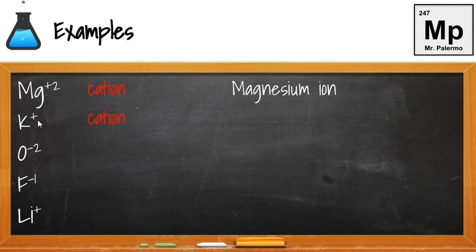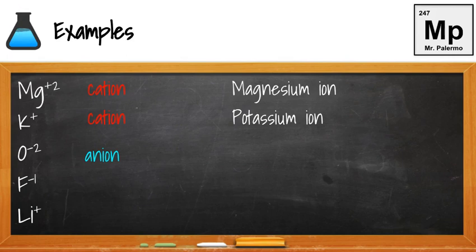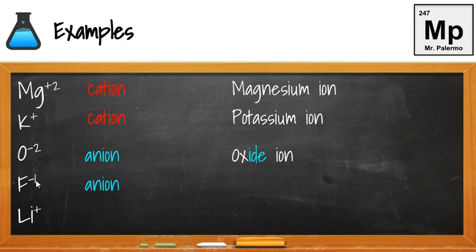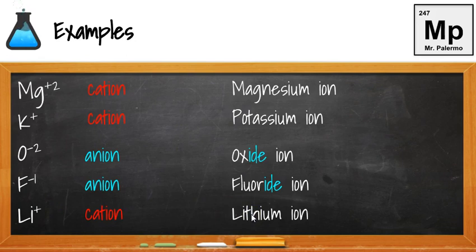Now we have a negative — that's an anion. For anions and negative ions, we take the first syllable and add "-ide." So oxygen becomes oxide ion. Same thing with fluorine: that's a negative ion, so that's an anion — we take the first syllable "fluor" and add "-ide" ending. Positive ion for lithium: that's a cation, so we'd write lithium ion. Now we're going to start to put these together to make a compound — lithium and fluorine coming together gives us lithium fluoride.